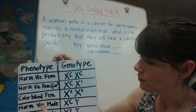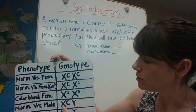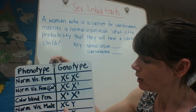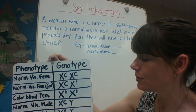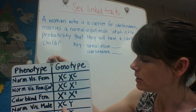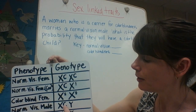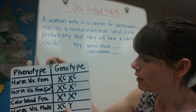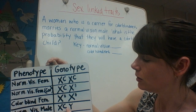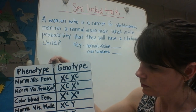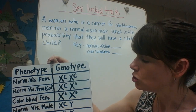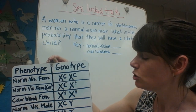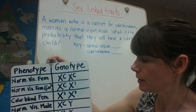A normal vision male — remember, males have the genotype XY. The X chromosome is much larger than the Y chromosome, so we're going to see a lot of traits passed on the X chromosome. A normal vision male has a large capital C, the dominant allele, on his X. A colorblind male will show a lowercase c on his X, which is the recessive defective allele for colorblindness.